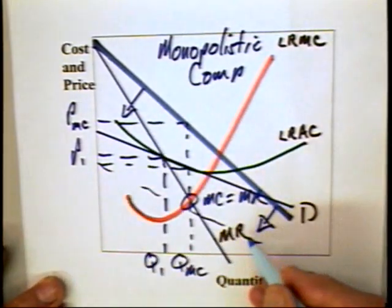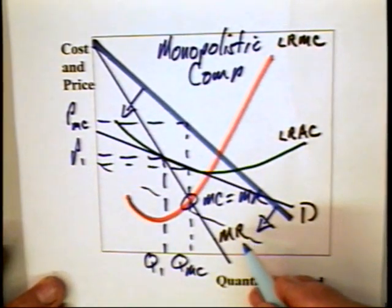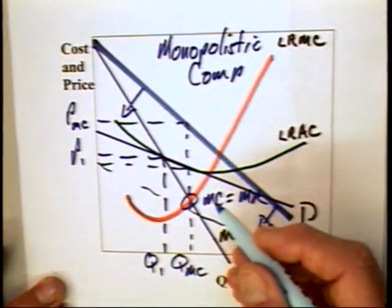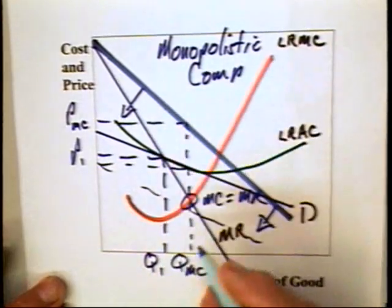Well, if monopolistic competitors are losing money, some of them in the long run will get out of the market. There will be fewer producers dividing up the market, the demand curve should go up.